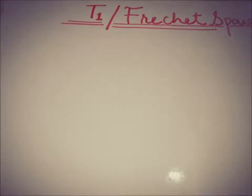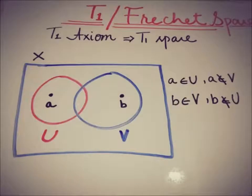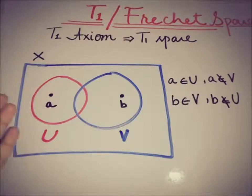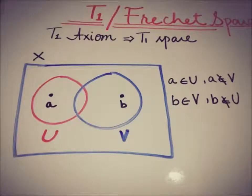A topological space is said to be T1 if for any two distinct points in a topological space X, there must exist open sets such that each contains one point but not the other. So here we have two distinct points A and B where U contains A and V contains B, but A does not belong to V and B does not belong to U. This is one of the cases we discussed when talking about the T0 space.